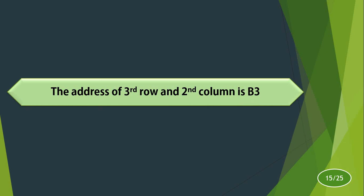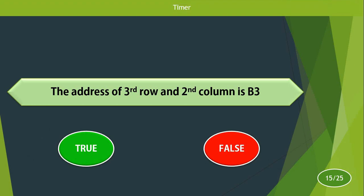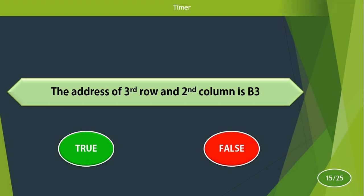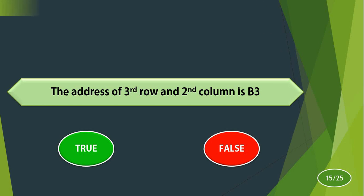The address of the third row and second column is B3. True or false? The answer is true. The column letter comes first — the second column is B — and rows are numbered, so the third row is 3. Therefore the address is B3. The answer is correct.